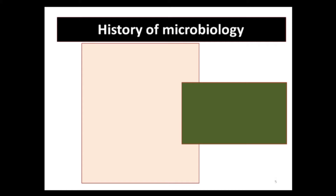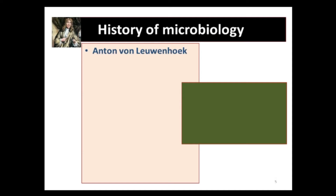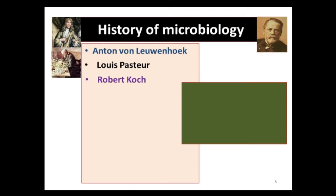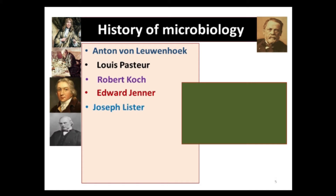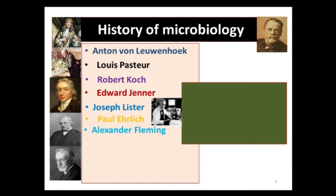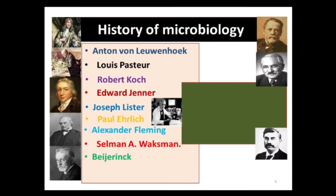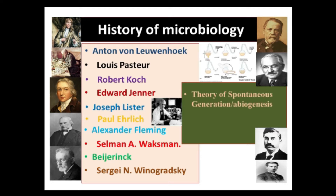Now we can discuss the history of microbiology. In this section we have to discuss the contributions of various scientists like Antony van Leeuwenhoek, Louis Pasteur, Robert Koch, Edward Jenner, Joseph Lister, Paul Ehrlich, Alexander Fleming, Selman Waksman, Bejerinck, Sergei Winogradsky, and others. We will also discuss two important theories: the theory of spontaneous generation, also called the theory of abiogenesis, and the germ theory.